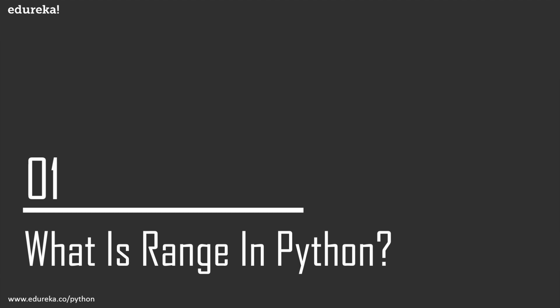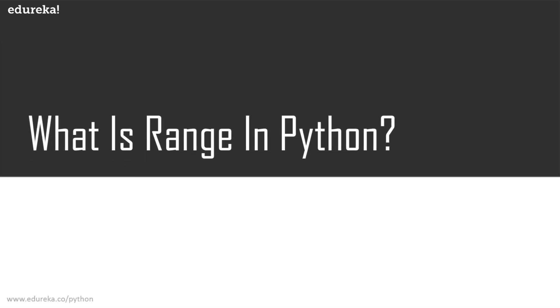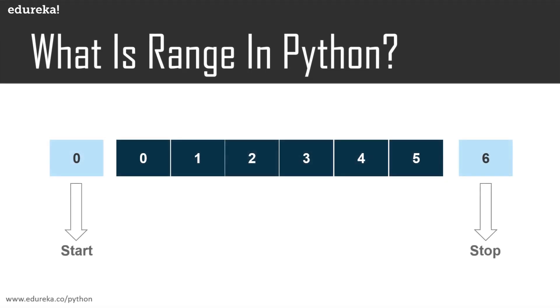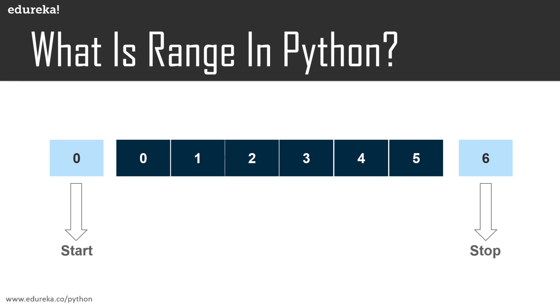Let's try to understand what exactly is range in Python. Range is an inbuilt function in Python which returns a sequence of numbers starting from 0 and increments by 1 until it reaches a specified number. The most common use of the range function is to iterate over a sequence type. It is most commonly used in for and while loops.